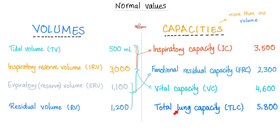Here are the volumes. Tidal volume is 500. Inspiratory reserve volume, 3,000. Expiratory reserve volume, 1,100. Residual volume, 1,200.